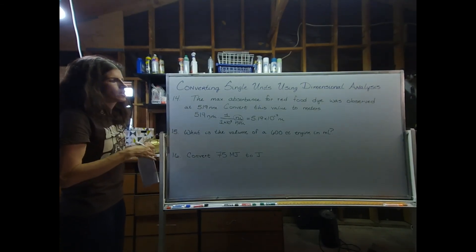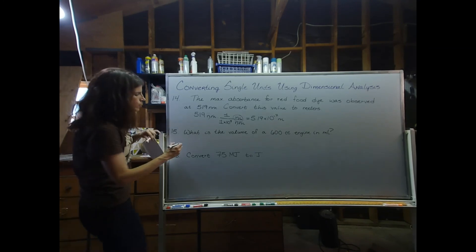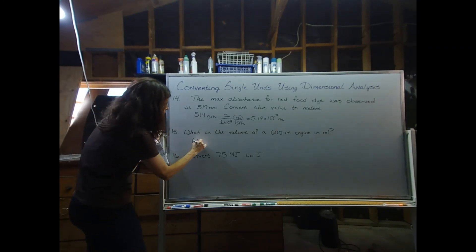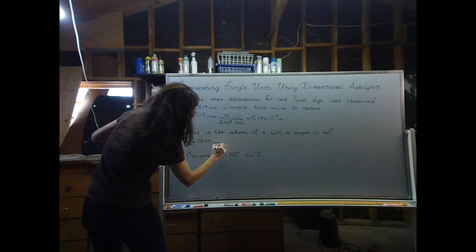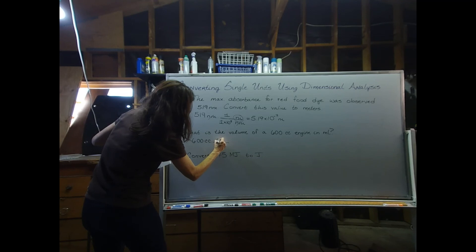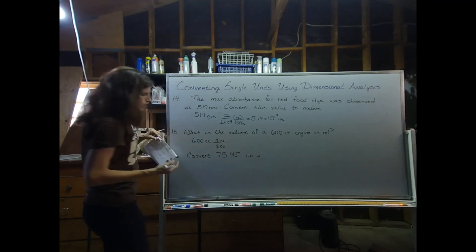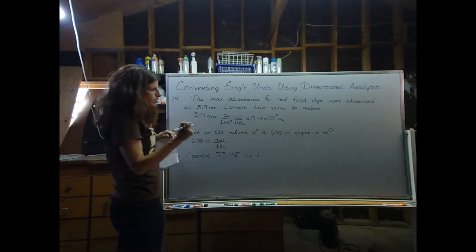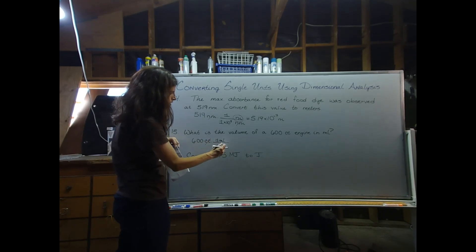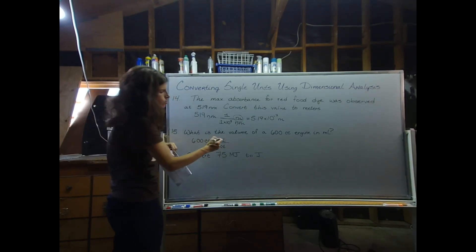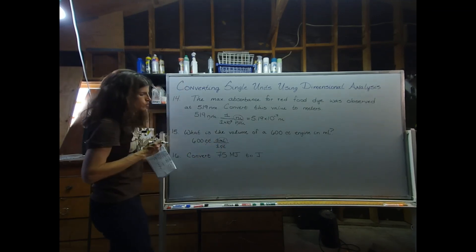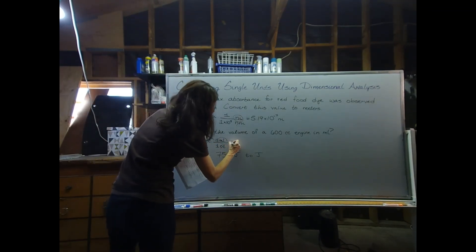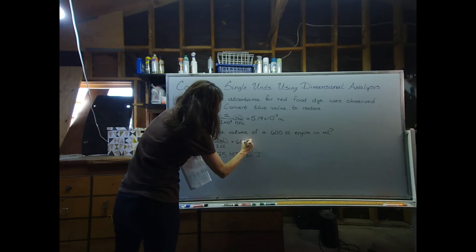What is the volume of a 600 cc engine in milliliters? Starting with 600 cubic centimeters: 1 cubic centimeter is equivalent to 1 milliliter — it's a one-to-one relationship. In the future you don't need to set this one up unless it helps you; you can just do it in your head. So 600 cc equals 600 milliliters.